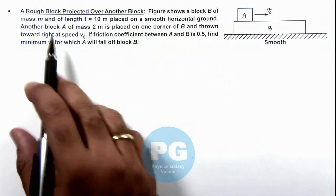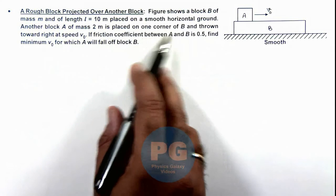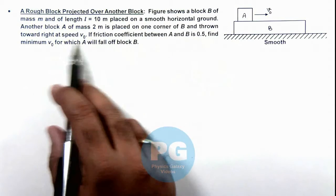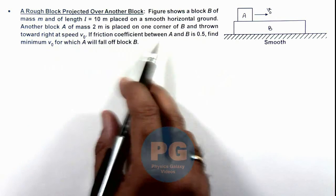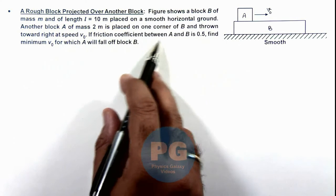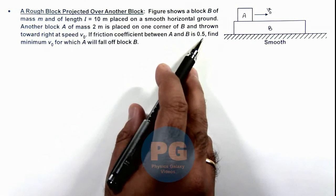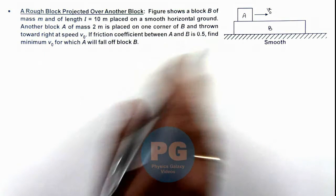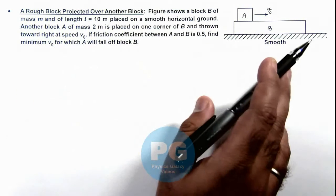Another block A of mass 2m is placed on one corner of B and thrown to the right at speed v₀. If friction coefficient between A and B is 0.5, we are required to find the minimum value of v₀ for which A will fall off block B.